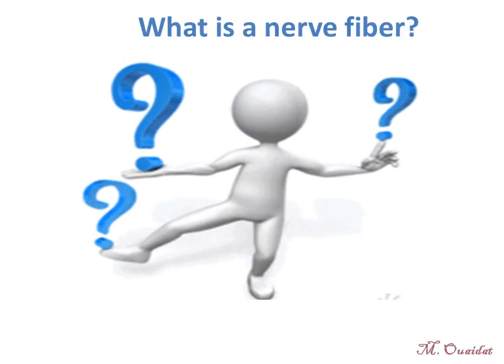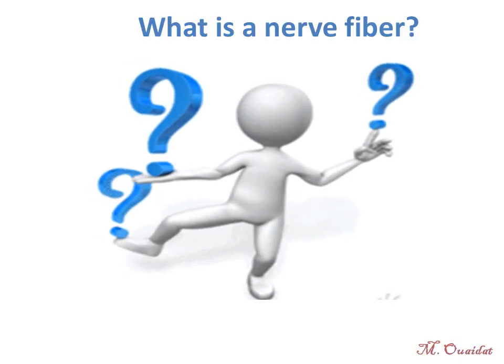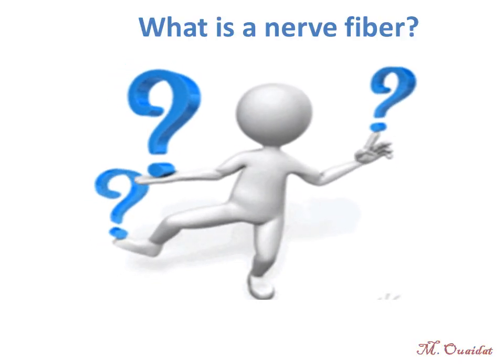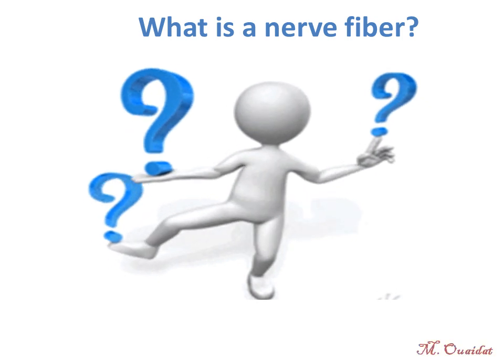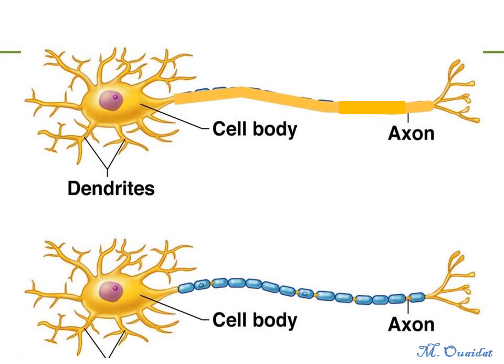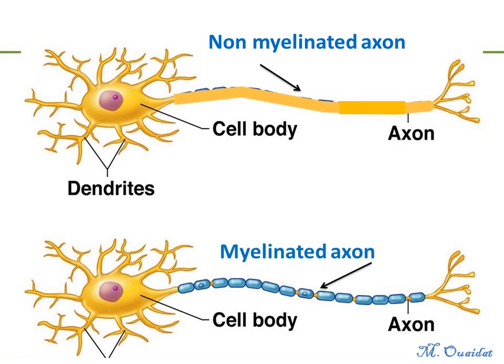What is a nerve fiber? As you see in this figure, a neuron can have a non-myelinated axon or a myelinated axon.